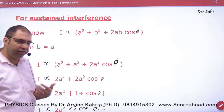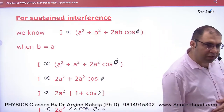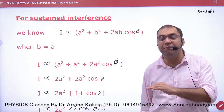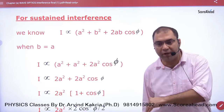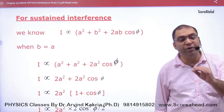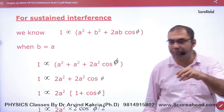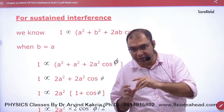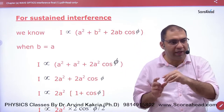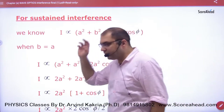Sustained interference is the interference in which the dark fringe will be completely dark and the bright will be completely bright. When will this happen? When the amplitude of the waves will be exactly the same — when the crest will be the same, the trough will cancel. So if the amplitude is the same, there will be cancellation, and this is why the resultant intensity is proportional to a² + b² + 2ab·cosφ.